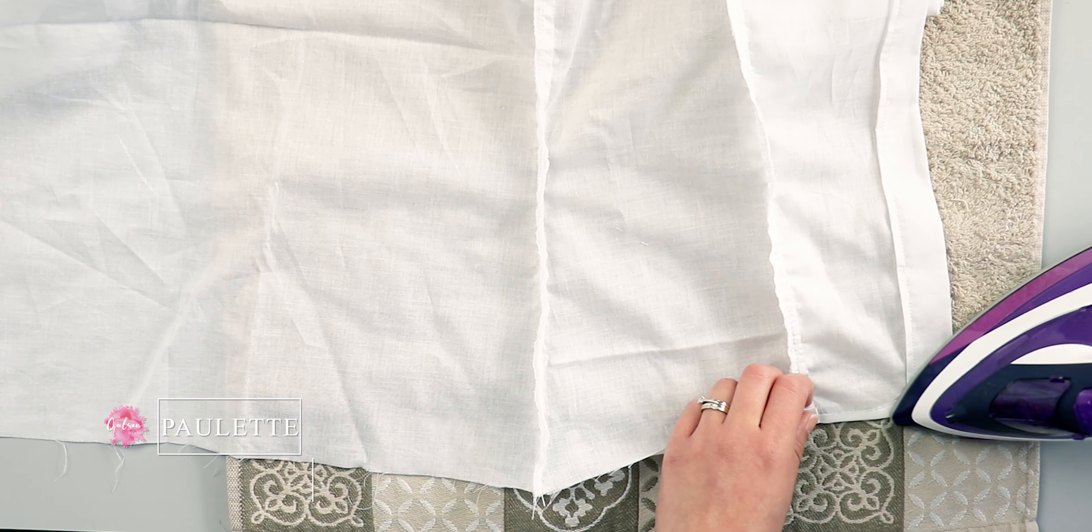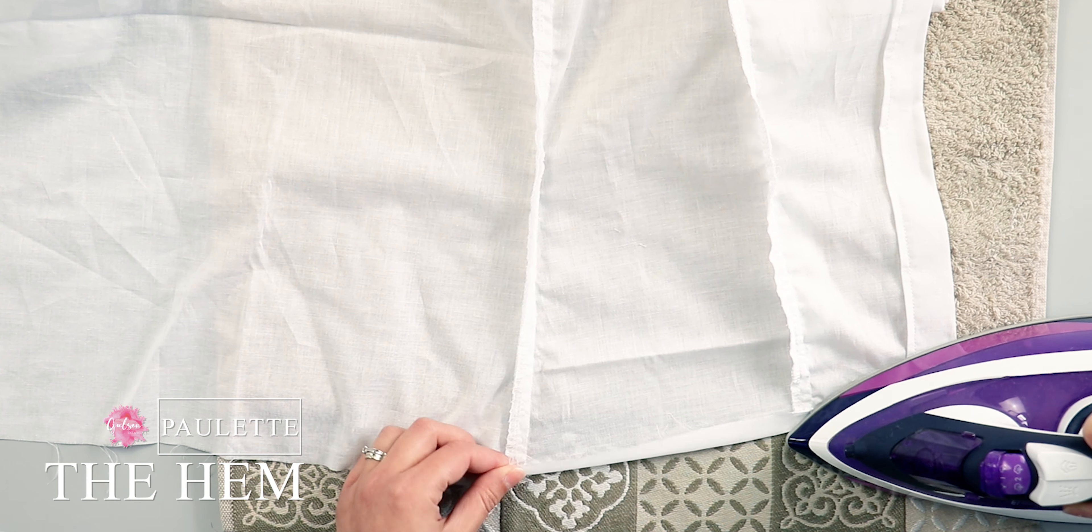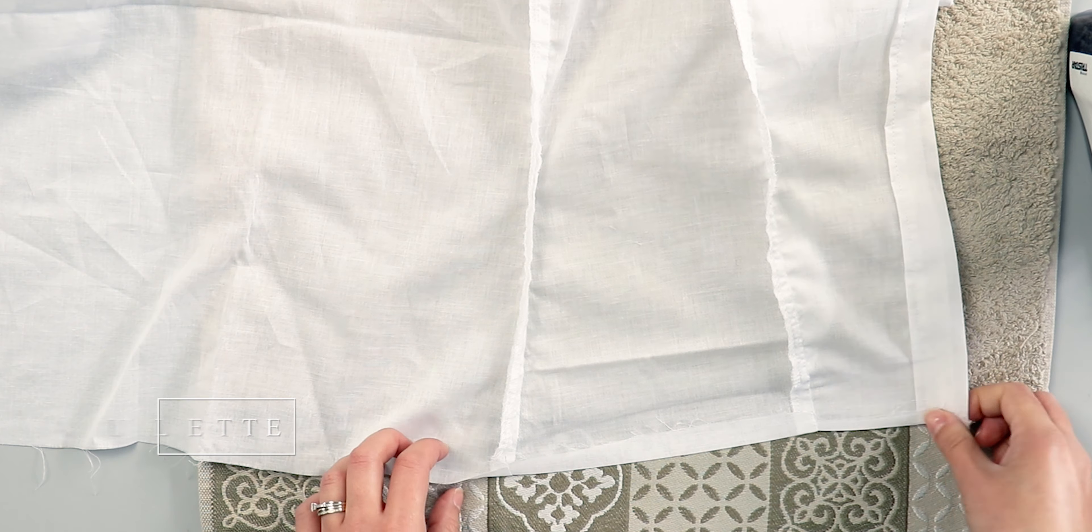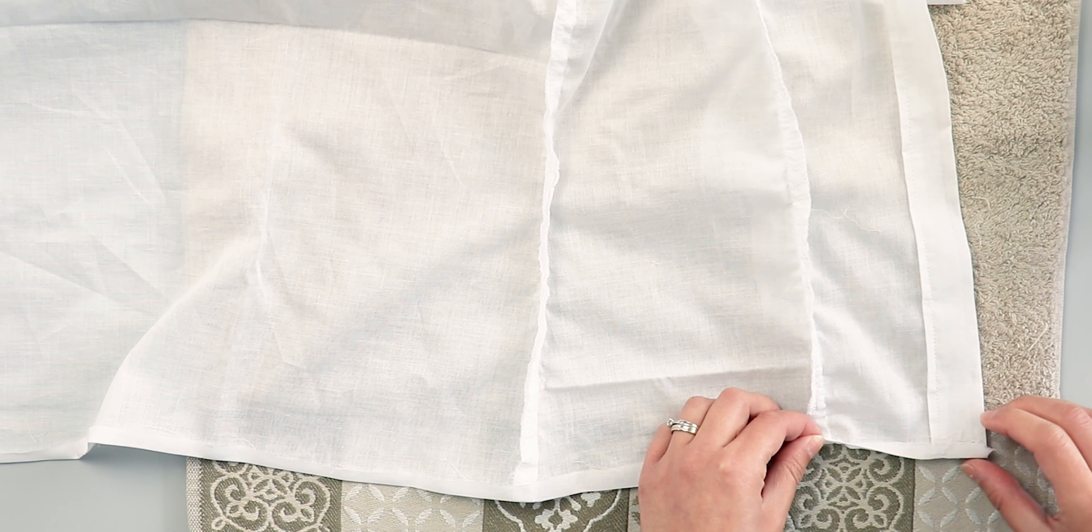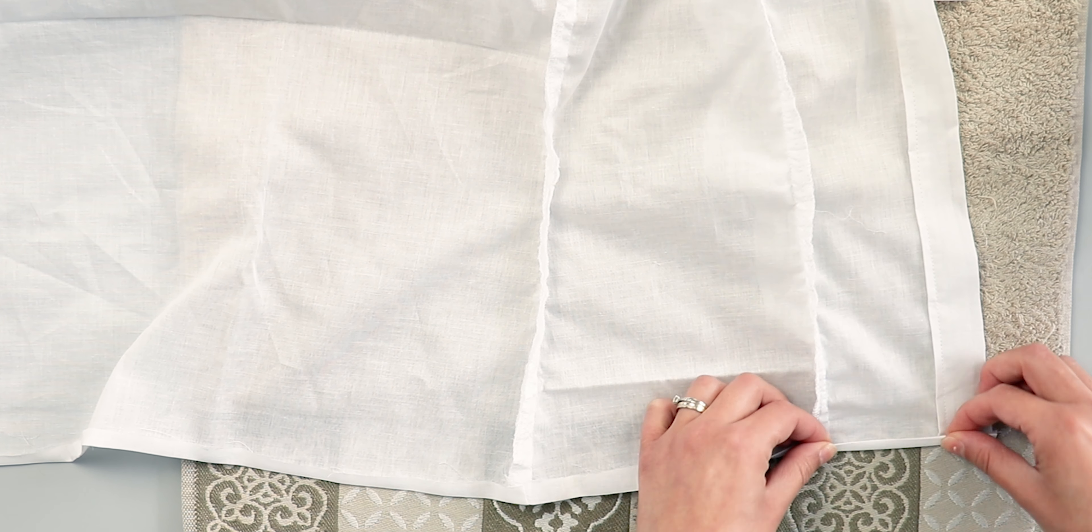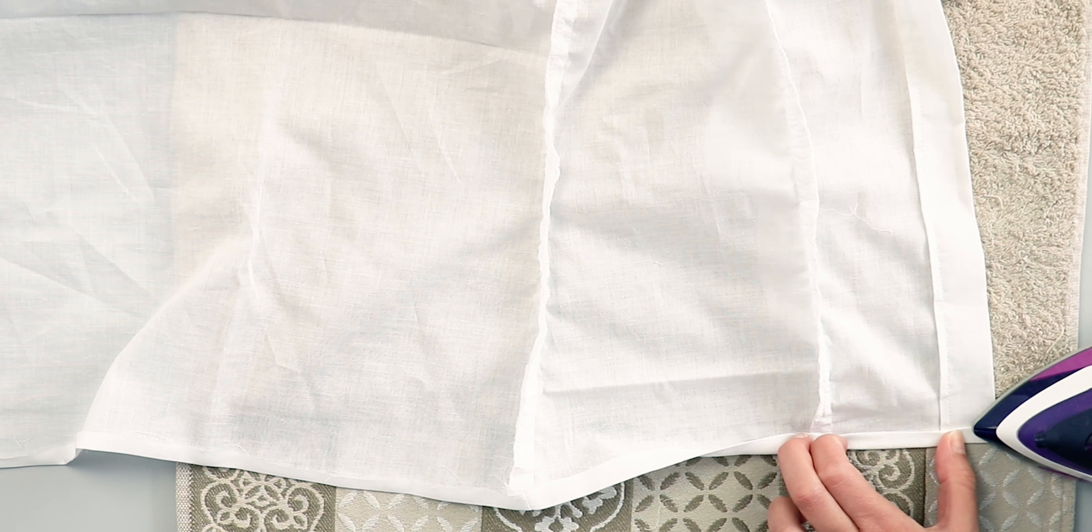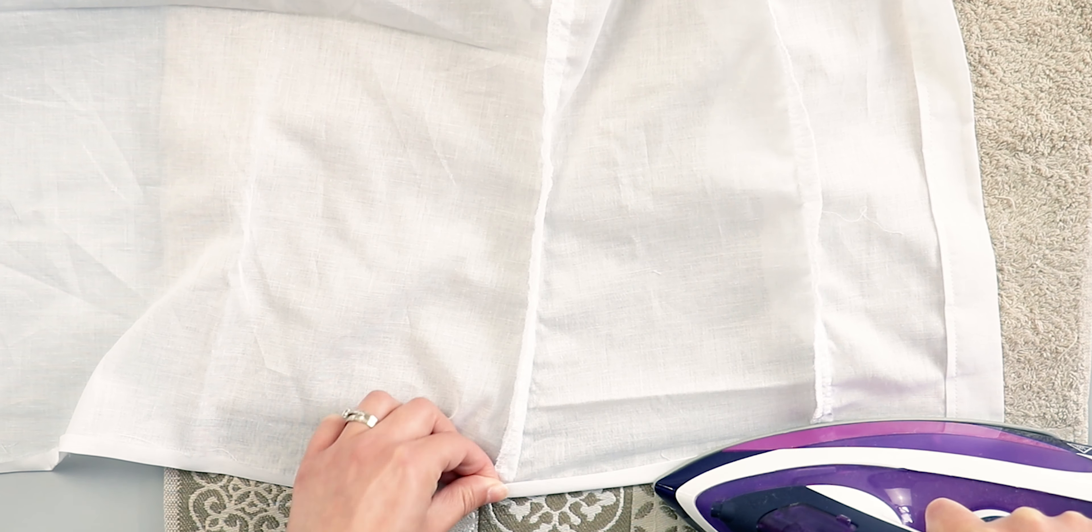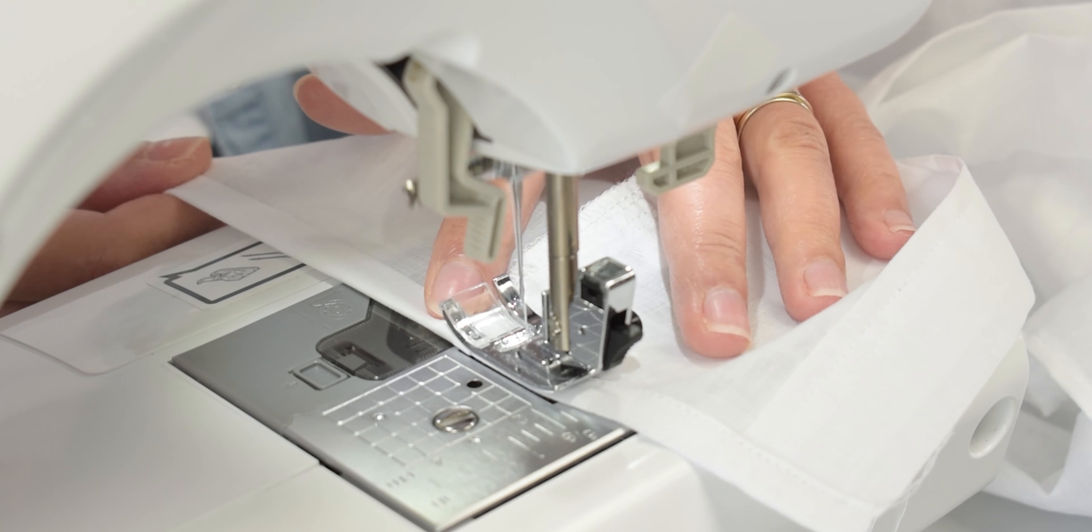Iron the hem allowance up at the V-notches and then open it back out. Fold the edge to the fold line and fold up again. Sew the hem in place close to the edge.